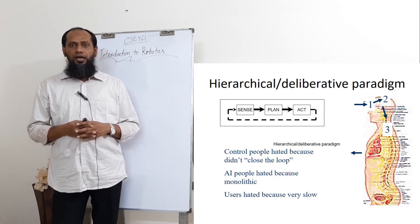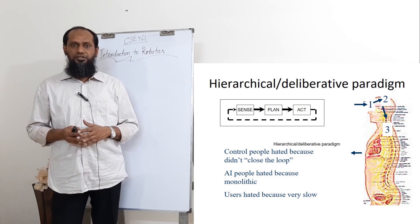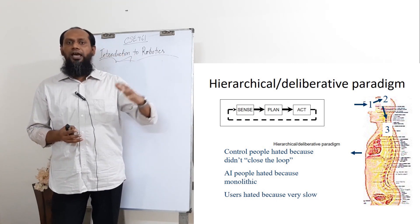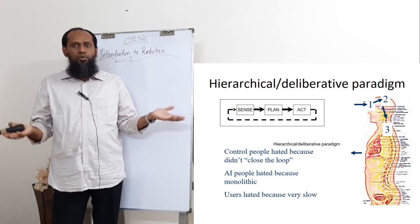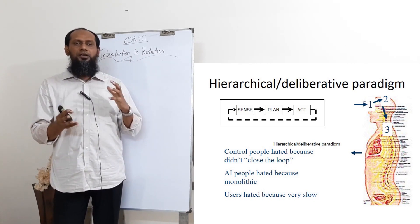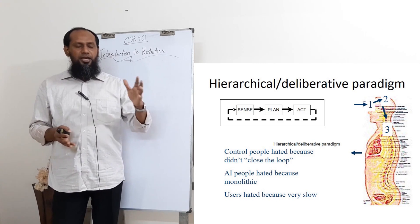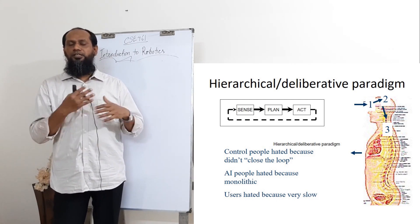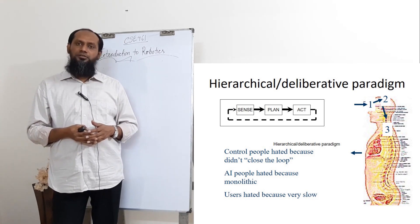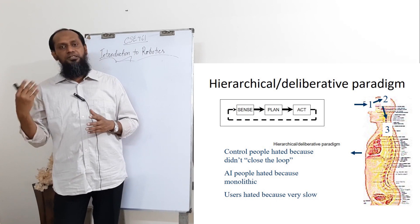In the hierarchical paradigm, as you can see in the right-side picture, we can see by the eyes, then we plan by our brain, and then we act. This is not a closed-loop system — sense, then plan, then act. That is the main concept of the hierarchical or deliberative system. Control people don't like it because there is no loop. AI people hate it because this is monolithic — again and again the same algorithm, no learning, no new features. Users don't like it because it is very slow; whenever it takes any move, it has to plan.